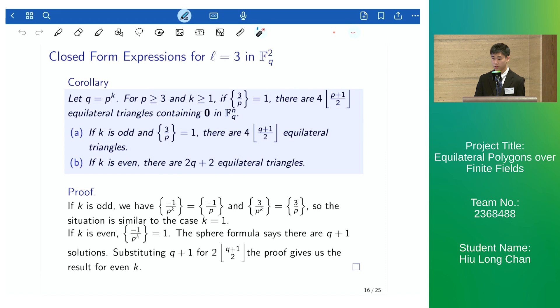A corollary of this in prime power order of finite fields is that if k is odd and 3 is a square mod p, there are the same number of equilateral triangles as we have in the previous case. And if k is even, then we have 2q + 2 equilateral triangles.